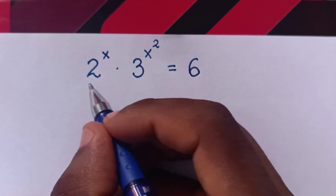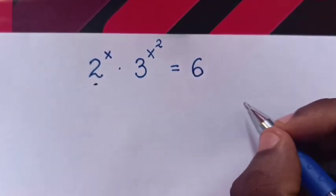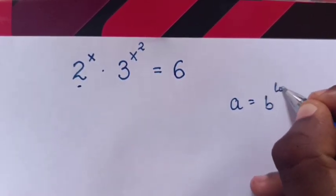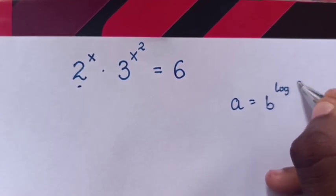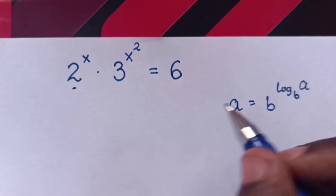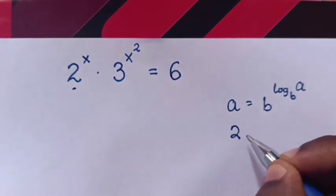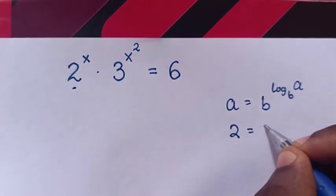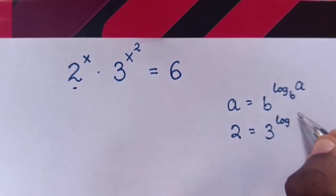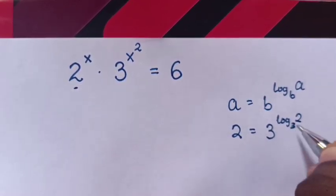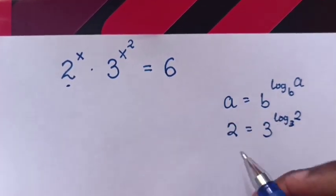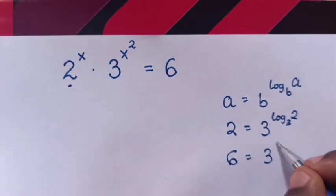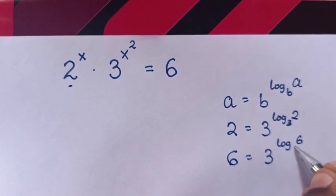From here, 2 power x, we will change it into logarithm by applying the logarithmic formula a is equals to b log a base b. So from here, 2 will be equals to 3 log of 2 base 3. And again, from this 6, 6 will be equals to 3 log 6 base 3.